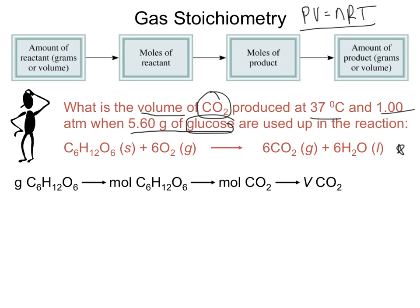The first thing we're going to do is take the grams of what we were given — the glucose — and convert it into moles. Once we've converted into moles of glucose, we can use the balanced equation and stoichiometry to go from moles of glucose into moles of CO2. And once we have our moles of CO2, we can use our ideal gas law to calculate our volume of CO2.